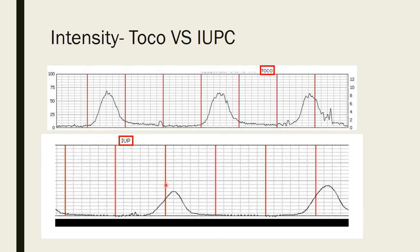One reason to place an IUPC is when a patient has been in a good contraction pattern but hasn't made cervical change — say she's been at six centimeters for four hours. After rupturing membranes and placing the IUPC, we might find her contraction intensity simply isn't high enough to produce cervical change. If she's on Pitocin, we can increase it to make contractions more intense and stronger so she can finally make cervical progress.